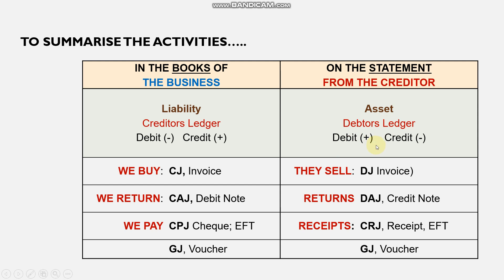Their entries mirror our debtors section. When they sell to us, they record it in their debtors journal and issue an invoice — we use the original and they keep a duplicate. When we return goods, they record it in their debtors allowances journal and prepare a credit note. The credit note is not our source document — we use the debit note we prepared. The credit note is merely a supporting document.